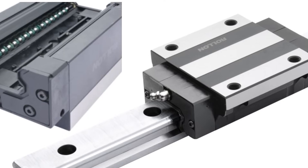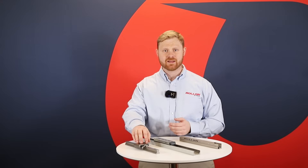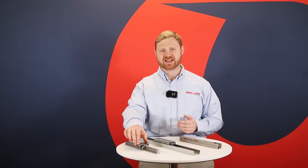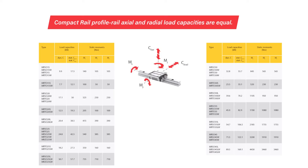This Roll-On monorail is a recirculating ball profile rail linear guide, and axial and radial loading applies a bit differently. Due to the orientation of the recirculating ball tracks inside the carriage, load will be evenly distributed on the four raceways regardless of whether force is applied on the top or the side of the slider. As a result, the radial and axial loads are equal, and these guides have equal load ratings in any mounting configuration.